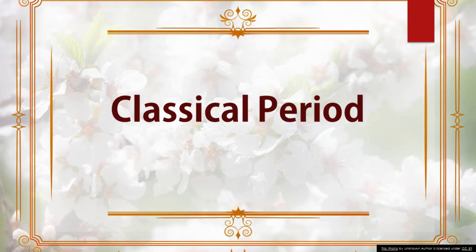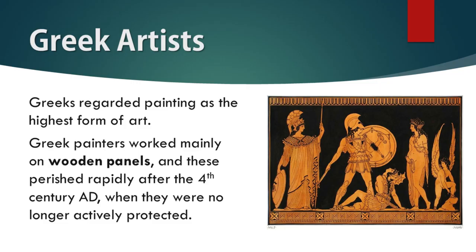Now, let's talk about the classical period, which is mainly about Greek and Roman art. Greeks regarded painting as the highest form of art, and Greek painters worked mainly on wood panels. These perished rapidly after the 4th century AD when they were no longer actively protected. Even though paintings were very important to the Greeks, most of them were made on wood panels and have since been lost.